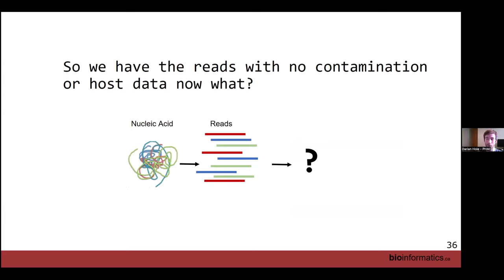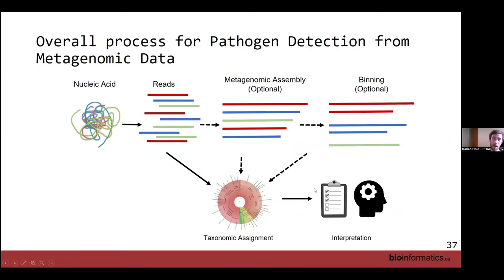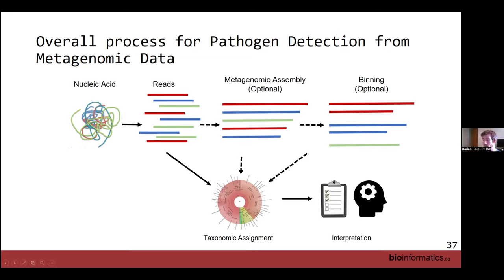Once you have reads with hopefully no contamination and no host DNA, what do you do next? You can either take your reads and use a program to assign them to a taxonomic rank, or try a metagenomic assembly to create contigs from your reads using a metagenomic assembler. Those contigs can be assigned to a taxonomic rank or binned into species based on shared characteristics. The biggest thing with metagenomic analyses is that interpretation of the data can be quite tricky, so always being aware of what's going on is important.